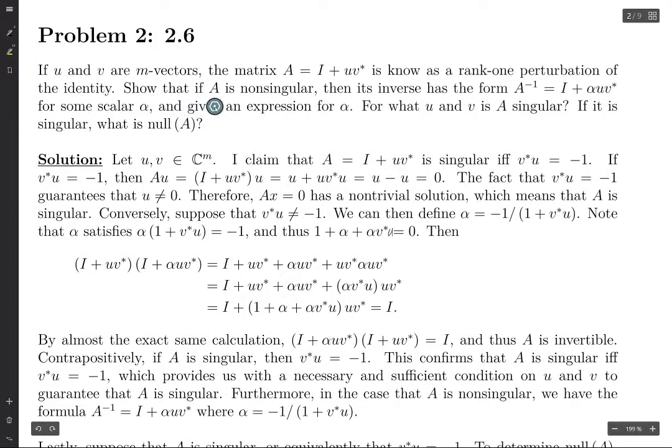Furthermore, in the case that A is non-singular, we have the formula A inverse equals I plus alpha U V star, where alpha equals negative 1 over 1 plus V star U. So if A is non-singular, then its inverse does indeed have this form for some scalar alpha, and we have an expression for alpha.